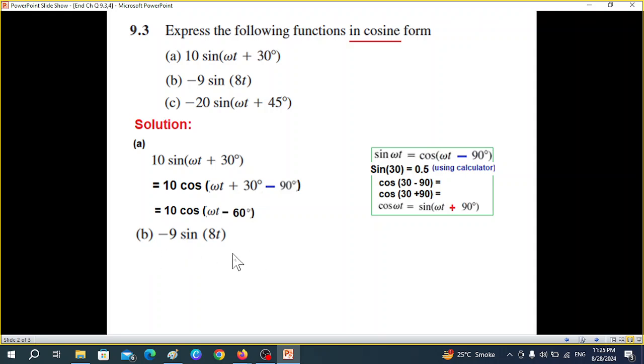Part b is slightly different. We have a negative sign here. Let me give you a concept of the negative sign in trigonometry. Here we know that on the right hand side we have positive values, on the left side we have negative values. So negative 5, to make it positive...